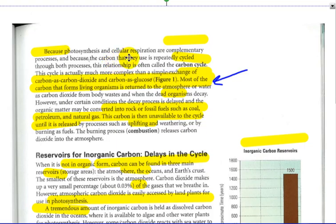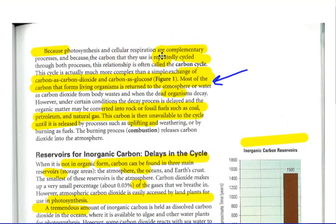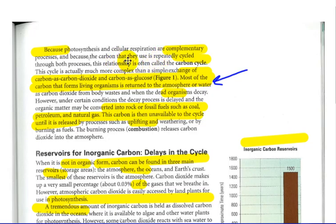Because photosynthesis and cellular respiration are complementary processes, and because the carbon that they use up is repeatedly cycled through the process, it is called the carbon cycle. The cycle is much more complex than just those two equations that we saw, but we can think of it that way. It's easier to think of it that way.